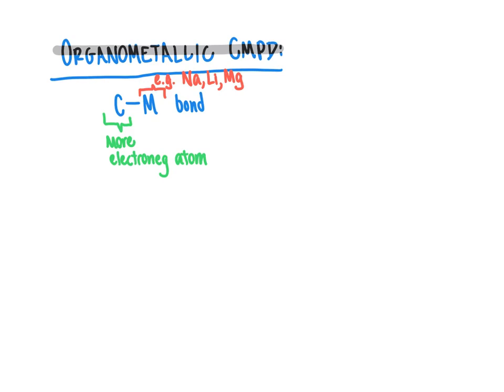Common metals that are used in organometallic reagents include sodium, lithium, magnesium, and others. Typically these are compounds that are found in the first two columns of the periodic table.